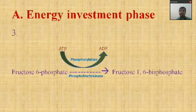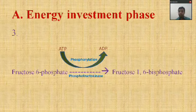The third reaction in the energy investment phase: fructose-6-phosphate is converted into fructose-1,6-bisphosphate. Again there occurs addition of one phosphate group, so there is loss of one ATP — as the source of the phosphate group is ATP. During the energy investment phase there is a total loss of two ATP molecules: one at reaction one and one at reaction three.